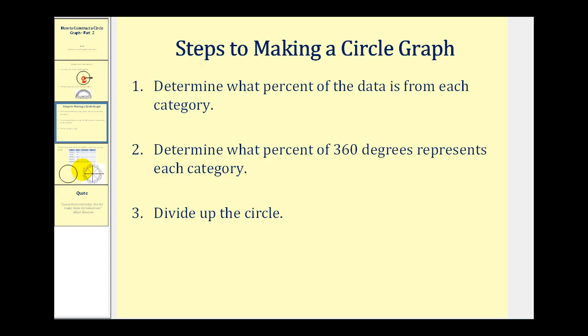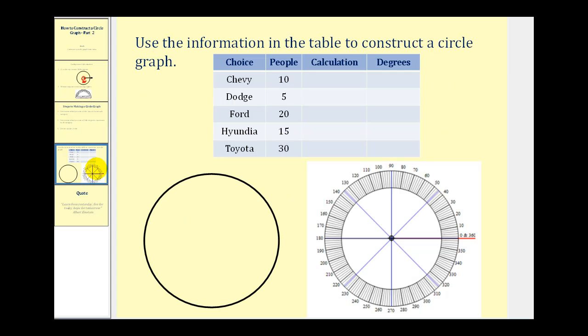Let's go ahead and look at an example. Let's say a certain number of people are surveyed to ask which type of car they prefer. And these are the results of that survey. So 10 people liked Chevys, 5 preferred Dodge, 20 preferred Ford, and so on.